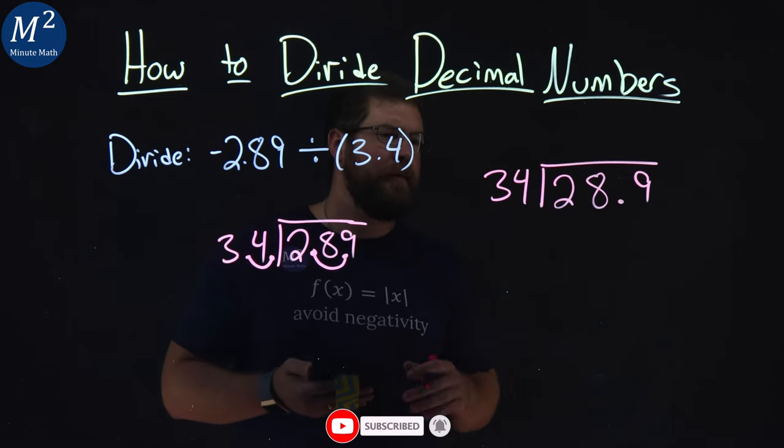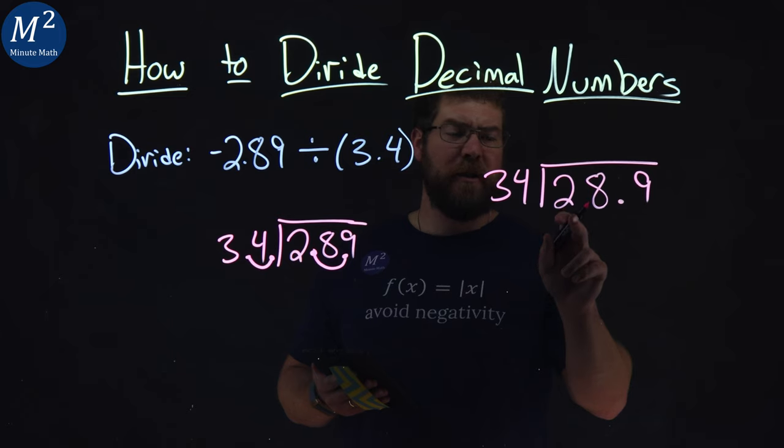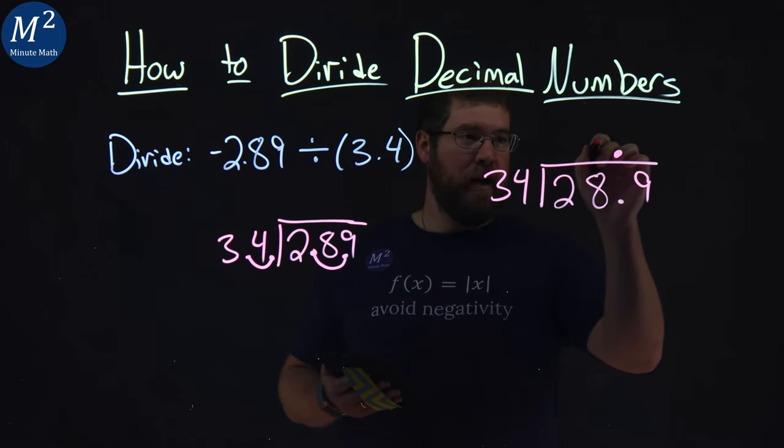From there, we will ask ourselves, 34 into 22? No. Into 28? No, can't have anything there. Keep the decimal place in line. Let's put a 0 here.